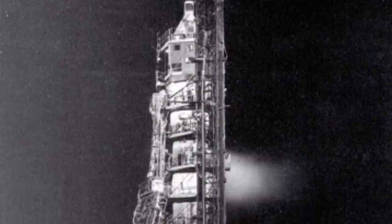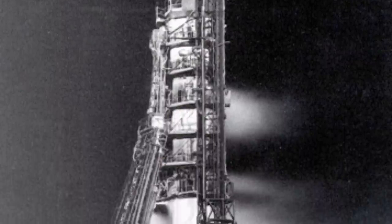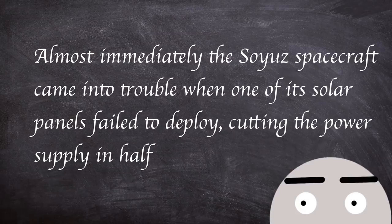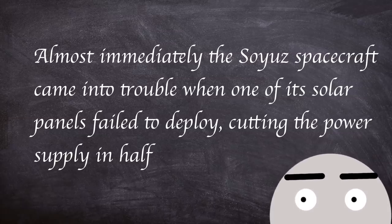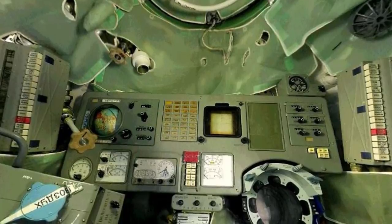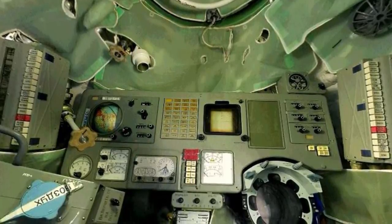The spacecraft was launched successfully at 3:35 AM Moscow time and reached the orbit needed for the mission. Almost immediately, the Soyuz spacecraft came into trouble when one of its solar panels failed to deploy, cutting the power supply in half.